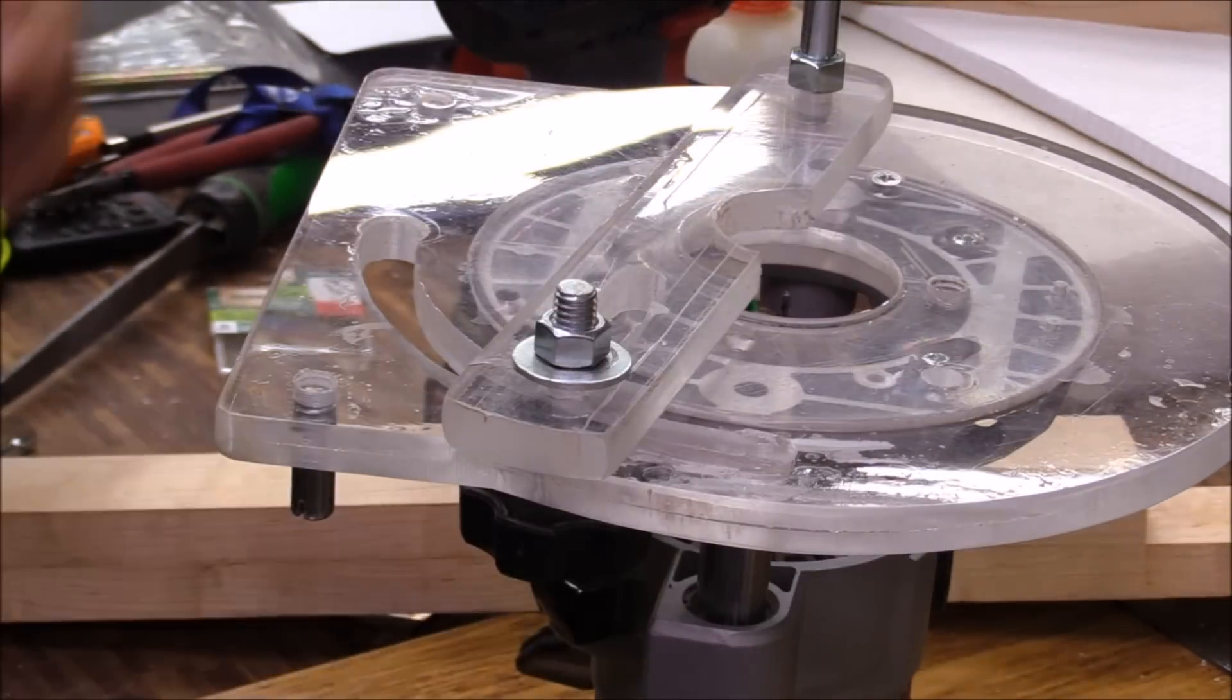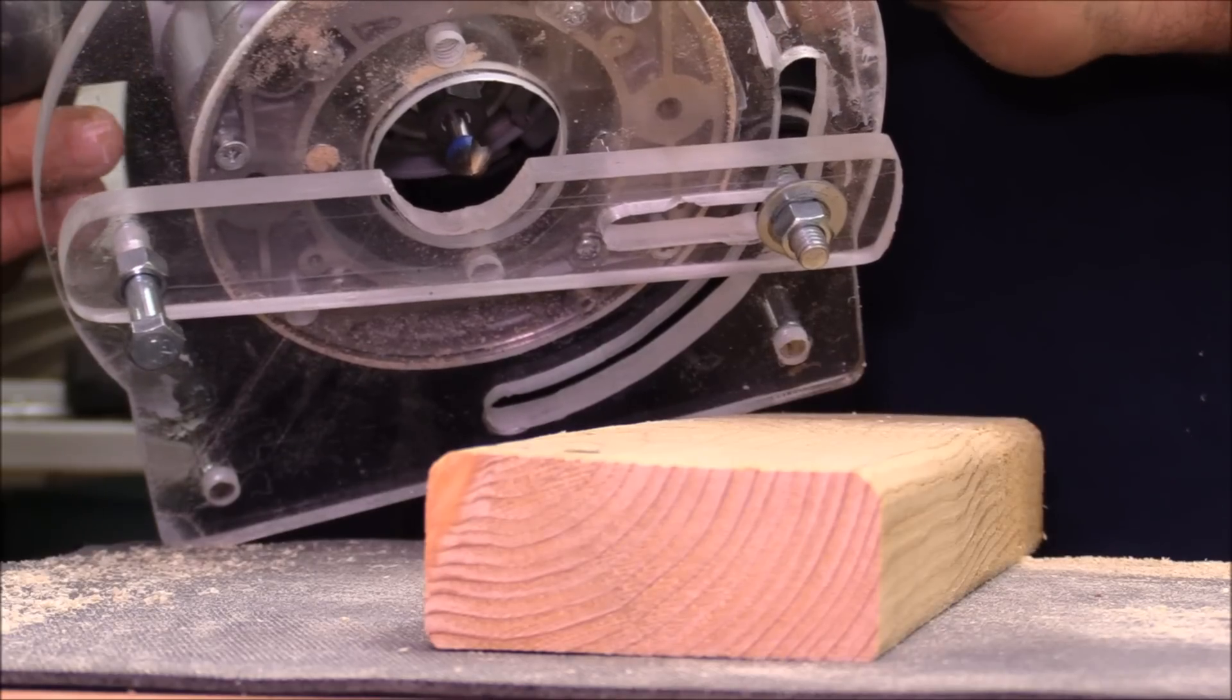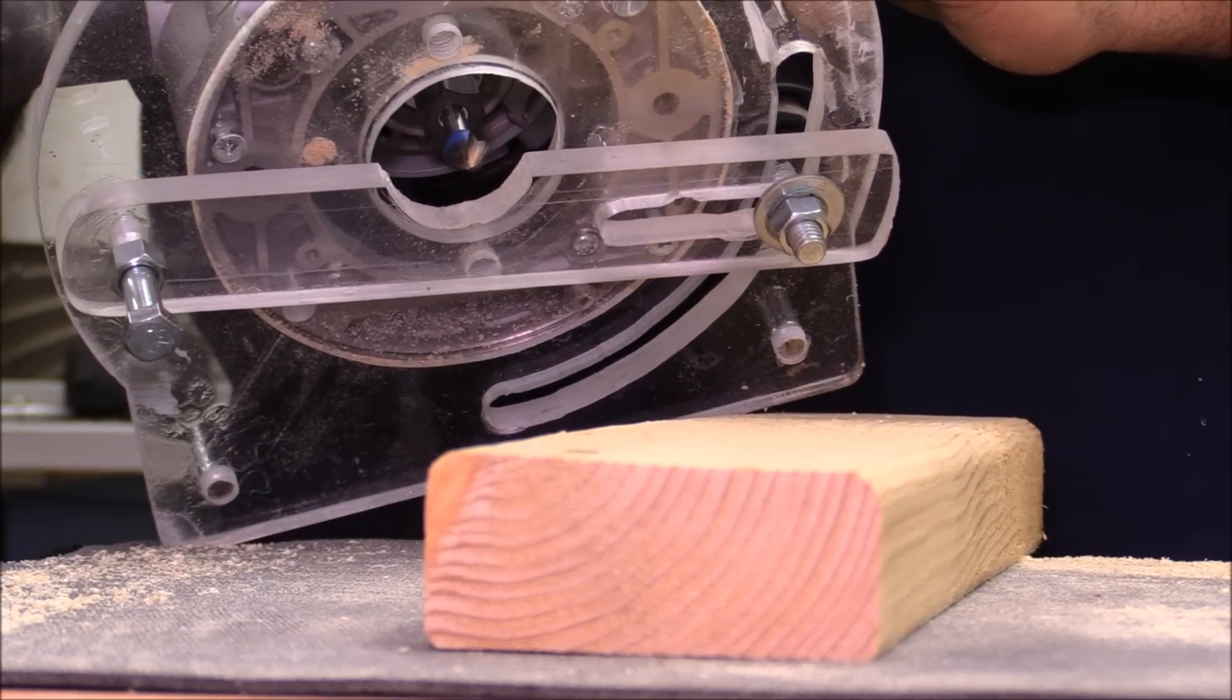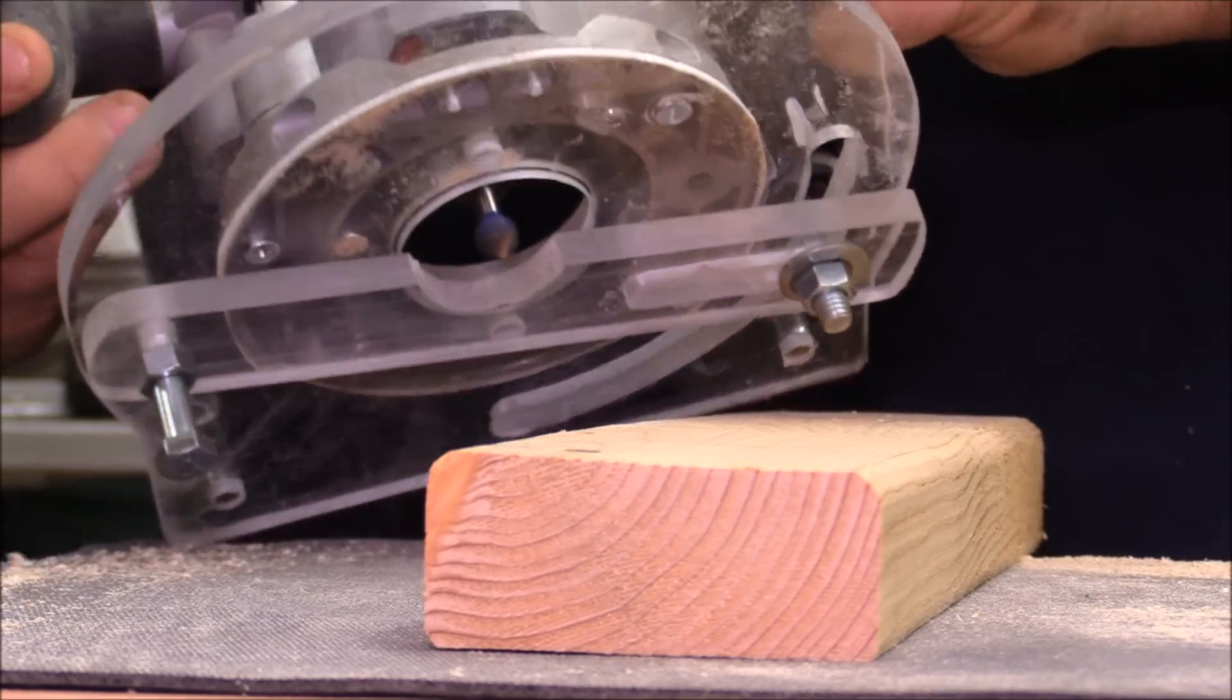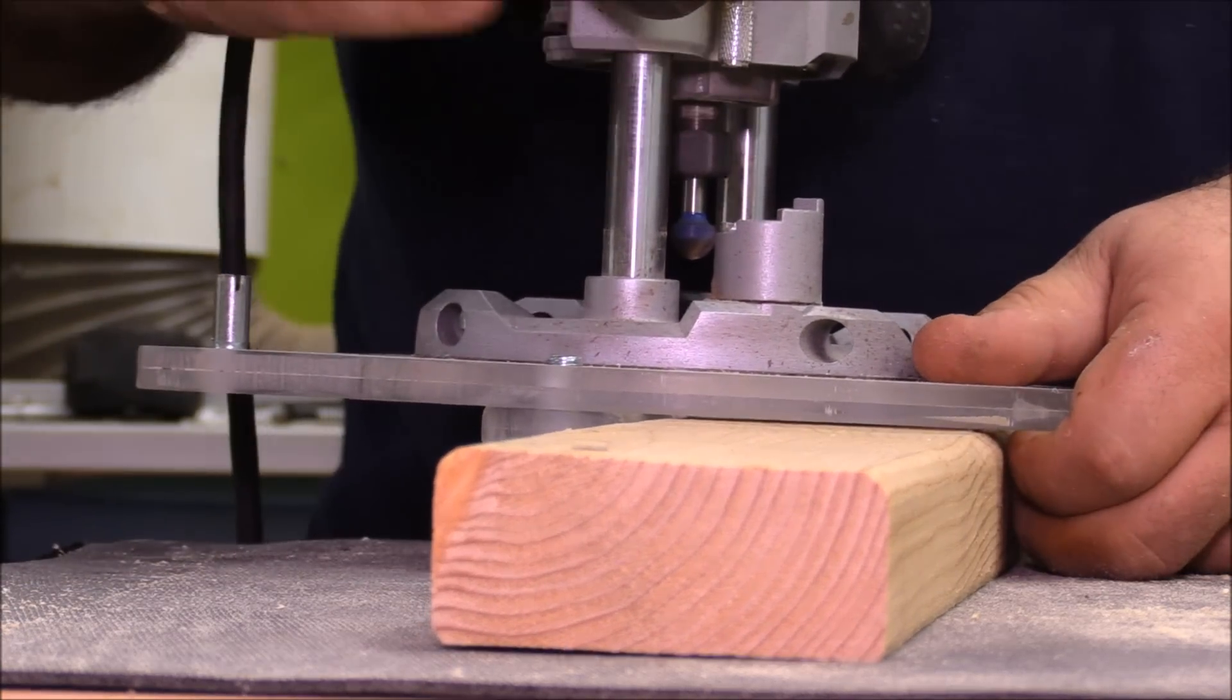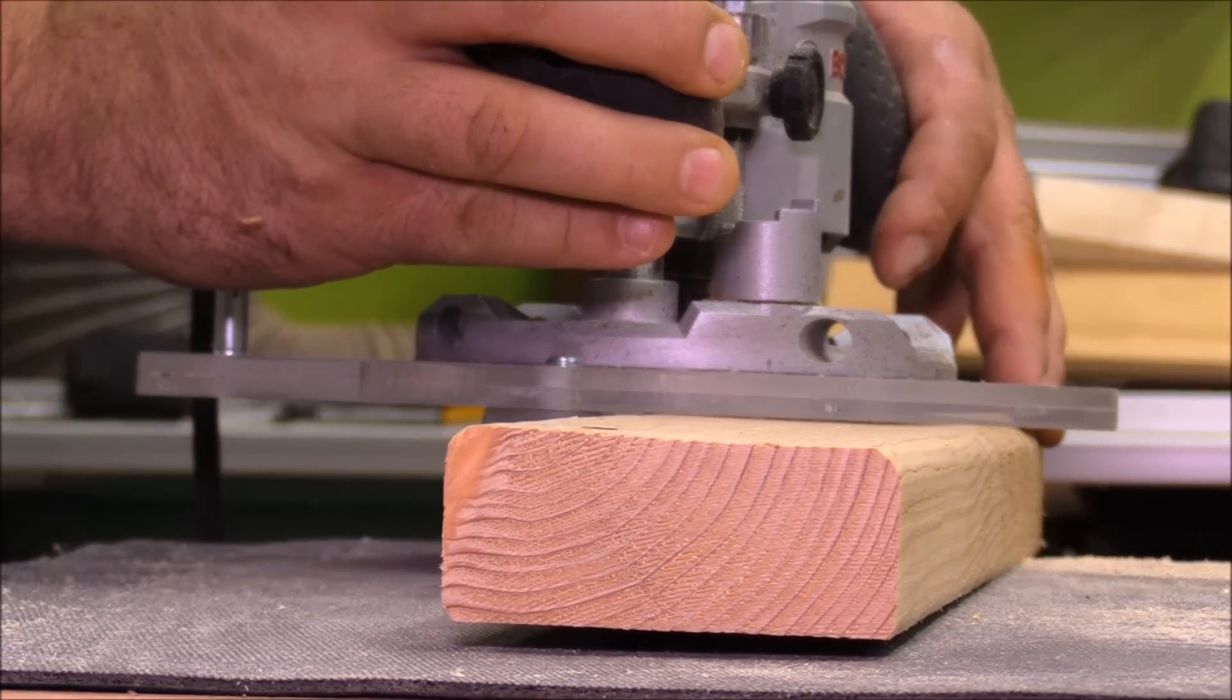The slots that I cut earlier are going to be used for this fence. This fence is adjustable, so I can use bits that don't have a bearing. I can use it to make profiles on edges because I have a lot of router bits that don't have bearings, and that makes it really handy to use some of the bits that I otherwise couldn't do. I can also use it as a fence and get up to about two inches into a material if I want to create a flute or something.